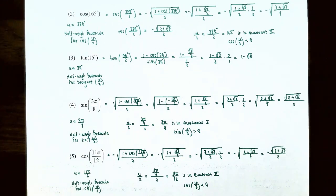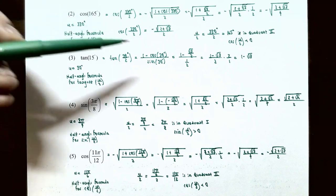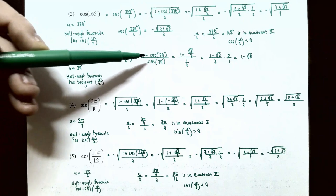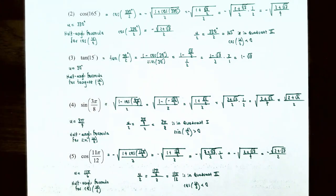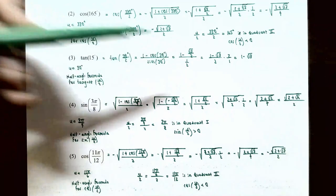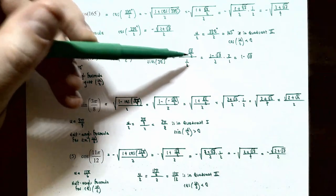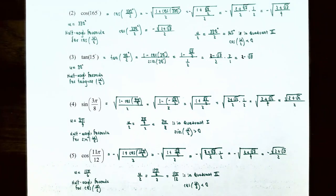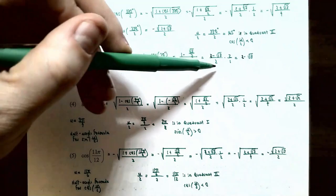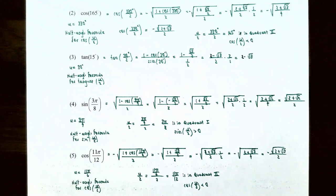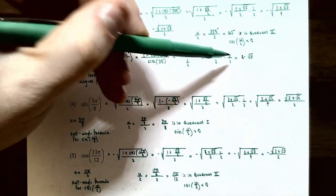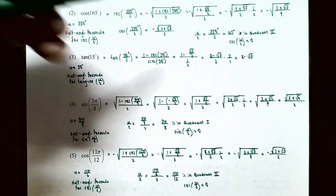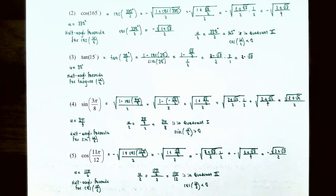Number 3: find tan(15°). Since 15° = 30°/2, u = 30°. Using tan(u/2) = (1 − cos u) / sin u: cos(30°) = √3/2 and sin(30°) = 1/2. So we have (1 − √3/2) / (1/2). Getting a common denominator in the numerator gives (2 − √3) / 2, divided by 1/2 means multiplied by 2, giving (2 − √3) / 2 × 2 = 2 − √3. So tan(15°) = 2 − √3.